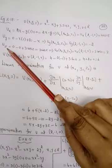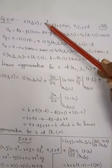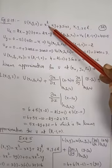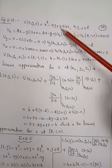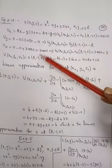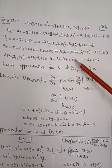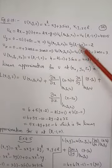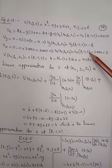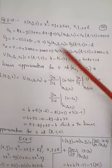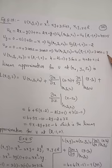Now differentiating u with respect to z partially: x² is a constant giving 0, minus xy is a constant giving 0, and 3sin(z) differentiated gives 3cos(z). So u_z = 3cos(z). At (x₀, y₀, z₀) = (2, -1, 0): substituting z=0, we get 3cos(0) = 3×1 = 3.